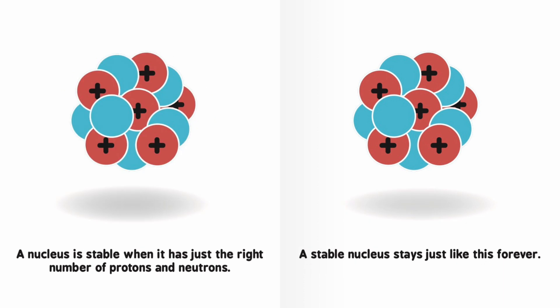A nucleus is stable when it has just the right number of protons and neutrons. A stable nucleus stays just like this forever.